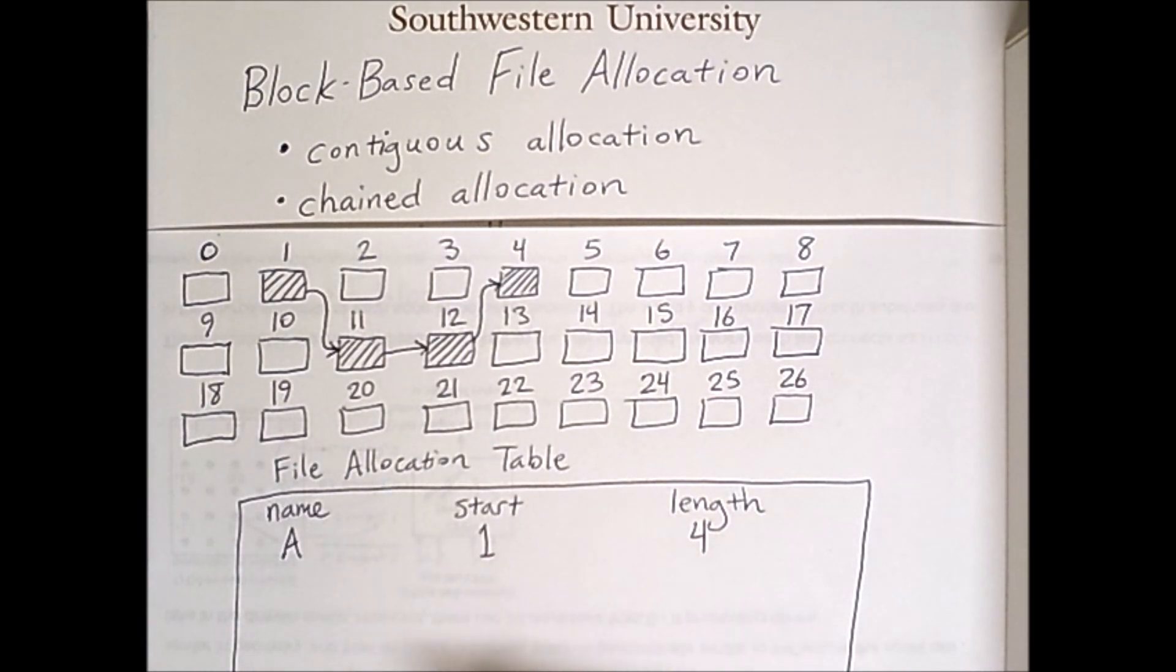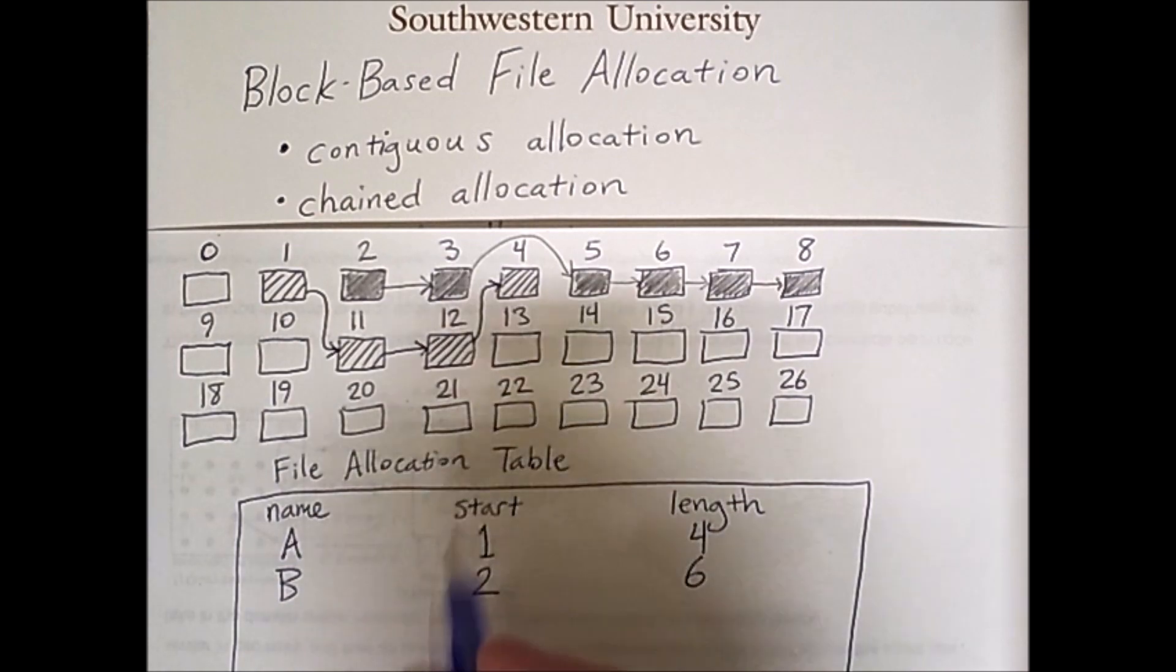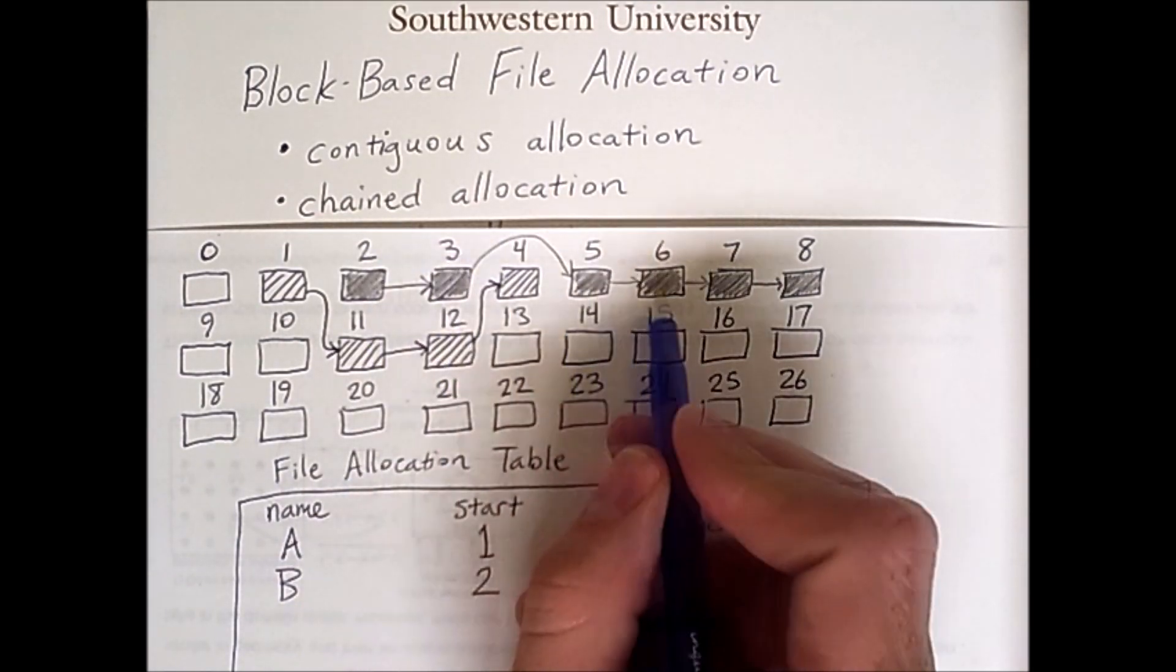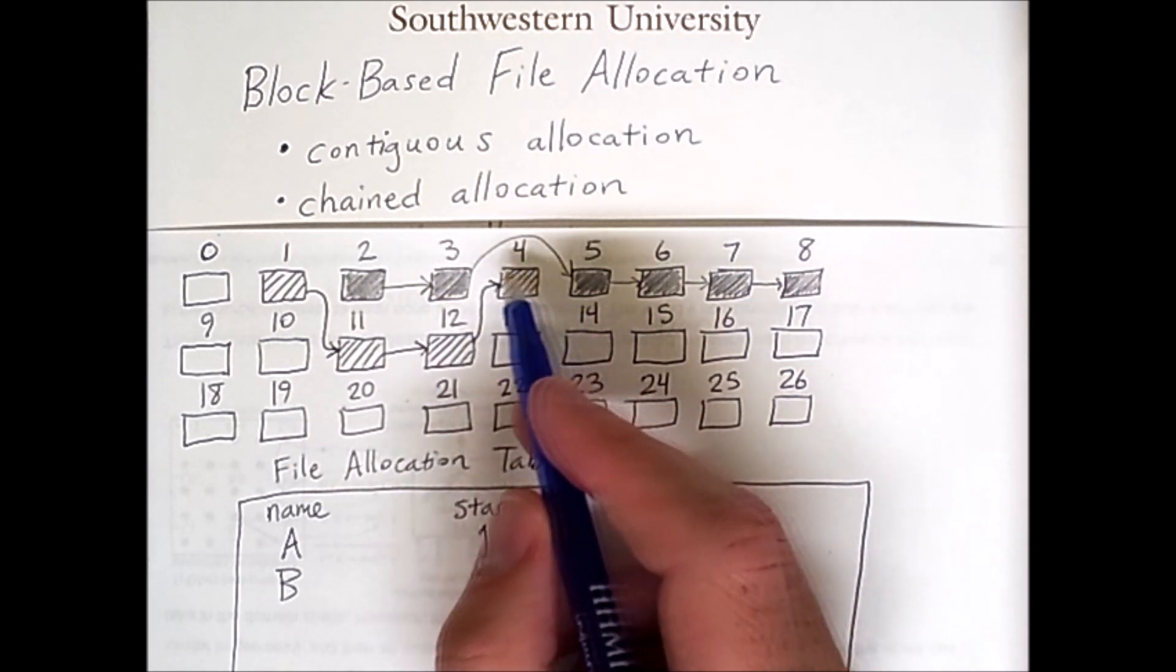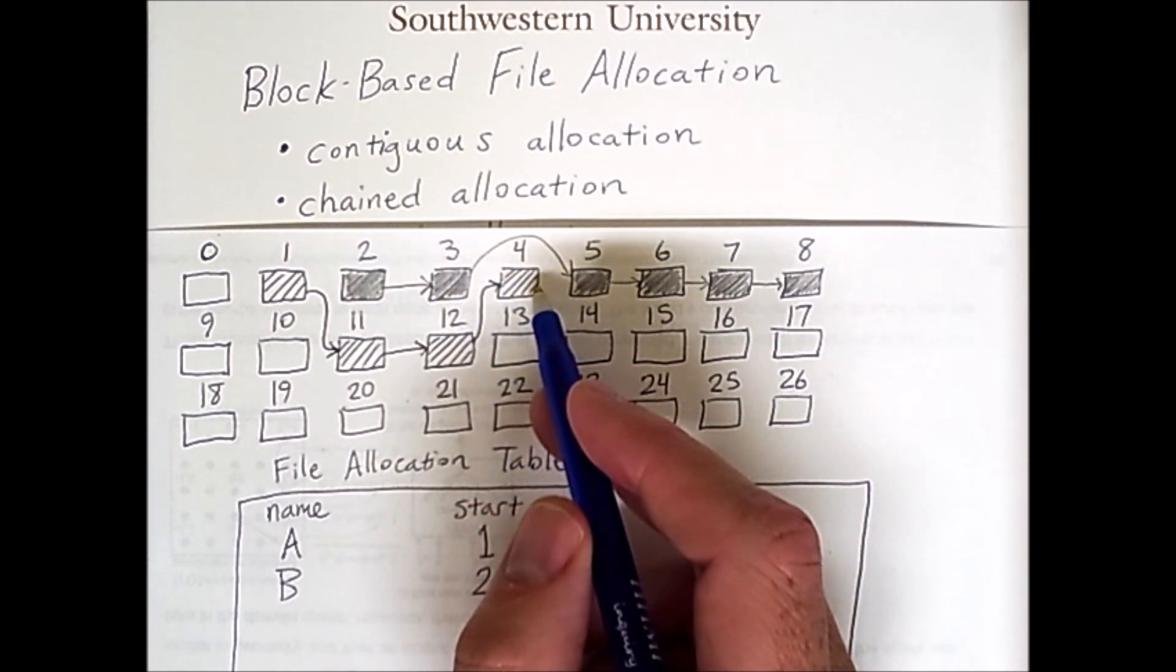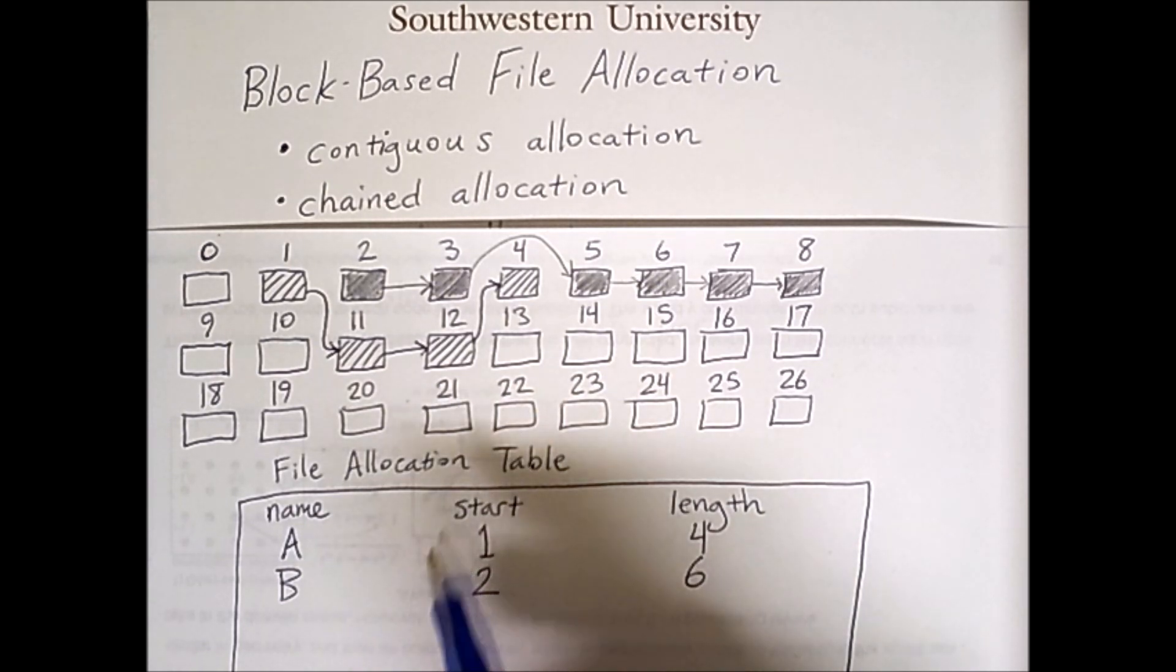So here's another file B. File B is allocated more or less the way you'd want to allocate new files on the disk. I still have to have all of these chain pointers but the file is mostly contiguous. The only exception is this hop over block 4. So the chained allocation method will always be able to find empty blocks to allocate to a file no matter where those blocks are located on disk. So we'll never be prevented from making new files.